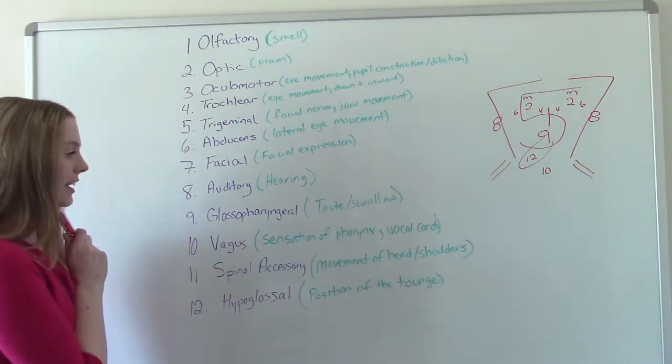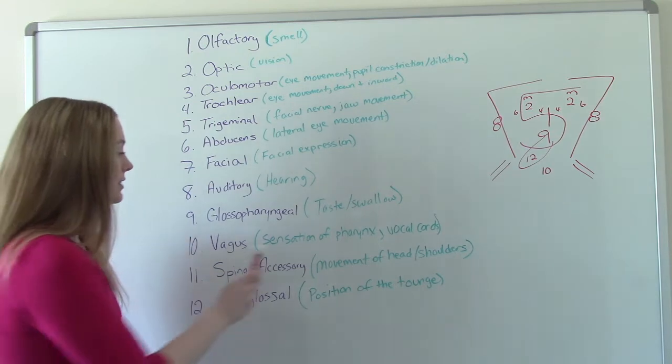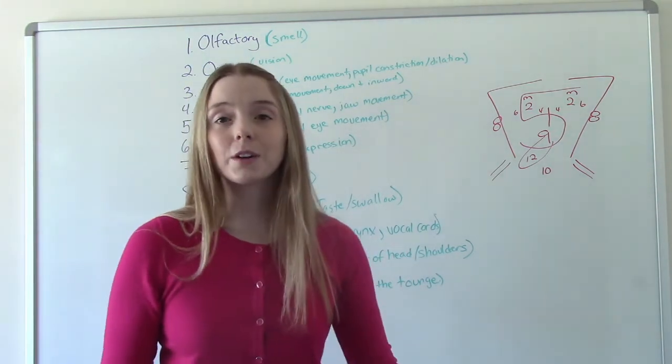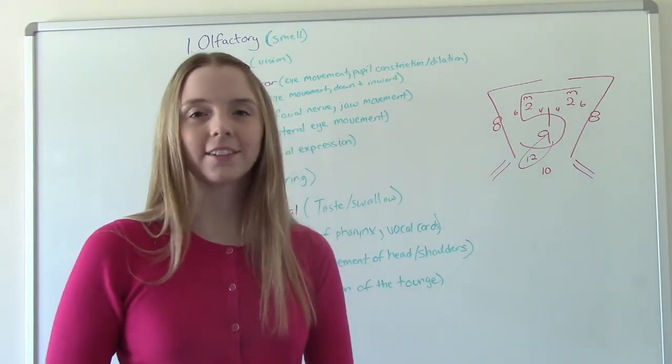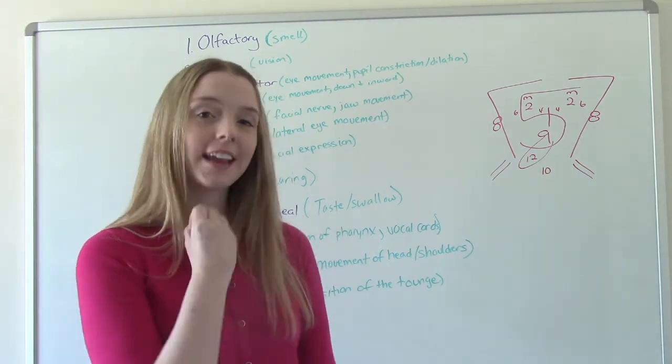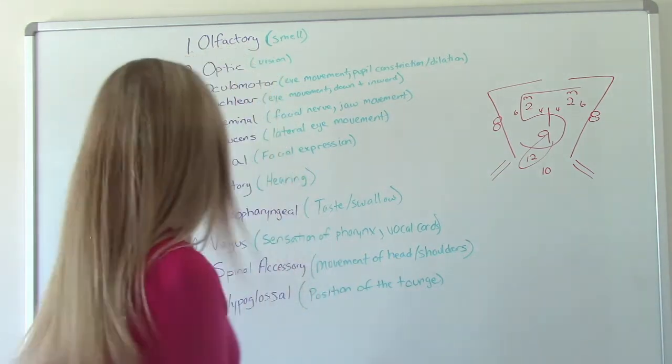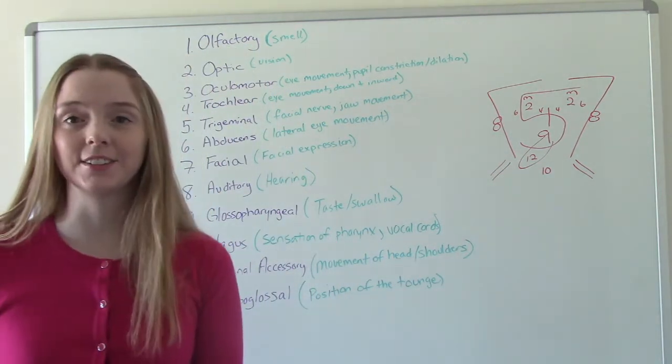Number 10 is our vagus nerve. So this is the sensation of the pharynx and the vocal cords. So this is what we're checking when we go say, ah, right? So if you can say, ah, I don't know why I'm singing it, but if you can do that, you heard number 10 vagus nerve is intact.